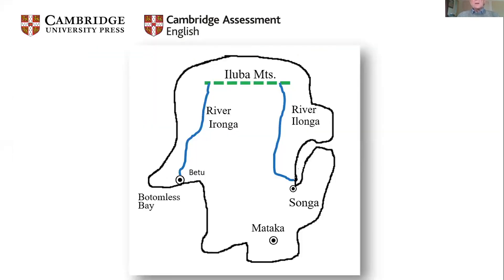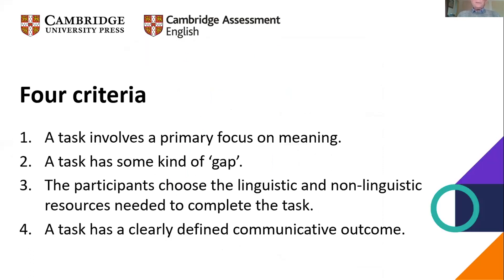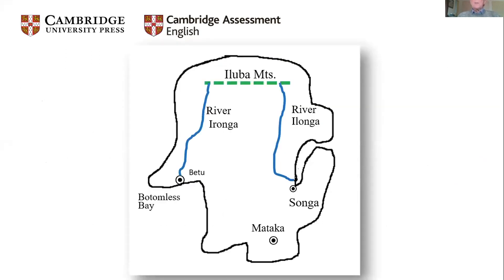So the question is: is this a task? In order to decide, we need to go back to my four criteria. Is there a primary focus on meaning? Very clearly, because you have to understand my descriptions of where these different places are — you're focusing on trying to understand what I'm saying. Is there a gap? Yes — I know where these places are, I'm telling you, you don't, and you have to listen to find out. Do you have to use your own linguistic resources? Very clearly — and notice that using your own linguistic resources applies not just to speaking but also to listening. And is there a communicative outcome? Absolutely — the map with the places located on it.